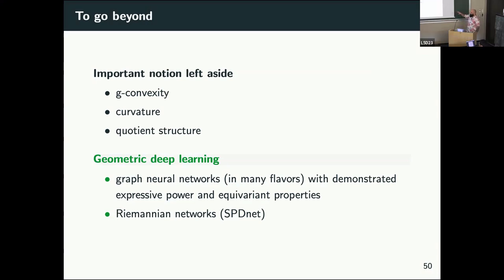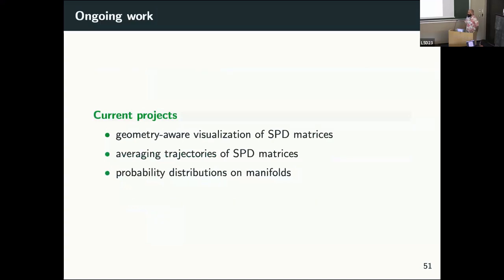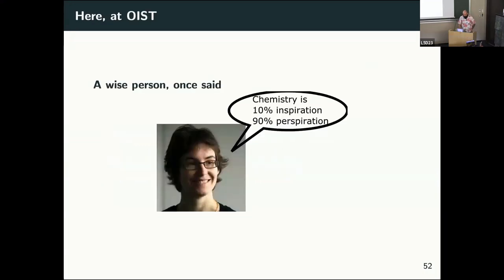Right now I'm working on visualization for SPD matrices, considering trajectories on the space of SPD matrices and how to average them. With Thibault, a student of mine, we're working on probability distributions on those curved spaces. What am I doing here at OIST? We have a nascent project at the interplay of computer science, chemistry, and machine learning — with Makoto, Christine, and Louise — trying to predict charge mobility from pairs of monomers (one donor, one acceptor). We're in the scarce data regime, which is challenging but exciting.